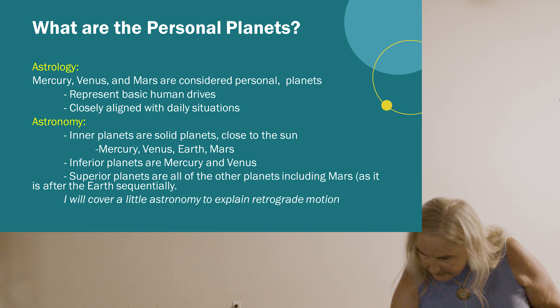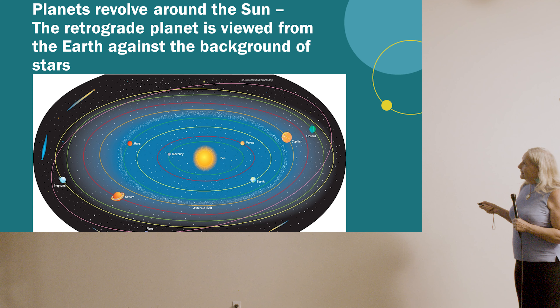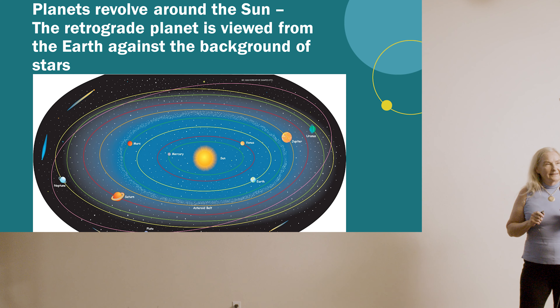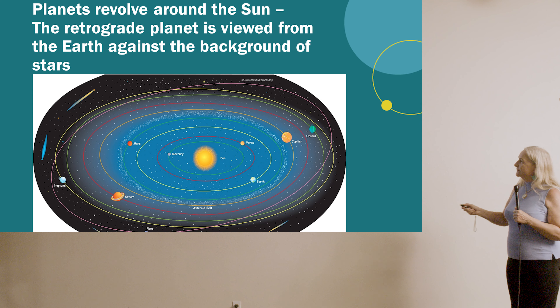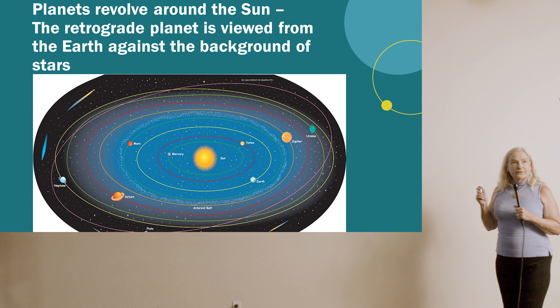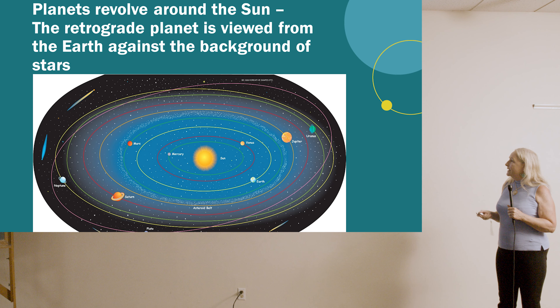This is our solar system — just an orientation for those that have forgotten grade six science. Here is the sun, then Mercury, then Venus, then Mars. What I want you to notice about the orbits is that they're elliptical. That's one of the important things to bear in mind when thinking about retrogrades happening. When you've got an elliptical orbit, it actually allows the planet to go faster or slower depending where in its own orbit it is.